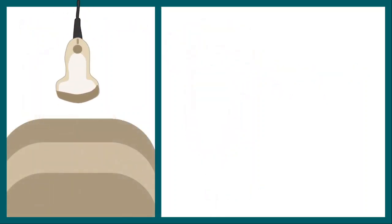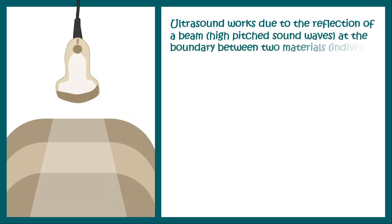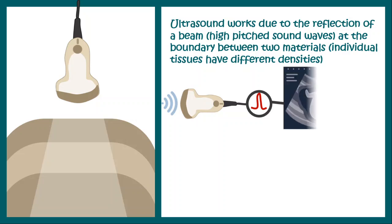When this probe is put over a body surface and supplied with electricity, the piezoelectric crystals generate sound waves. These sound waves get reflected back to the probe, and the piezoelectric crystals sense this mechanical vibration and produce an electrical pattern. Ultrasound works due to the reflection of a beam at the boundary between two materials of different densities, because in the human body different tissues have different densities. This electrical pattern is analyzed by software in a computer and an image is produced.